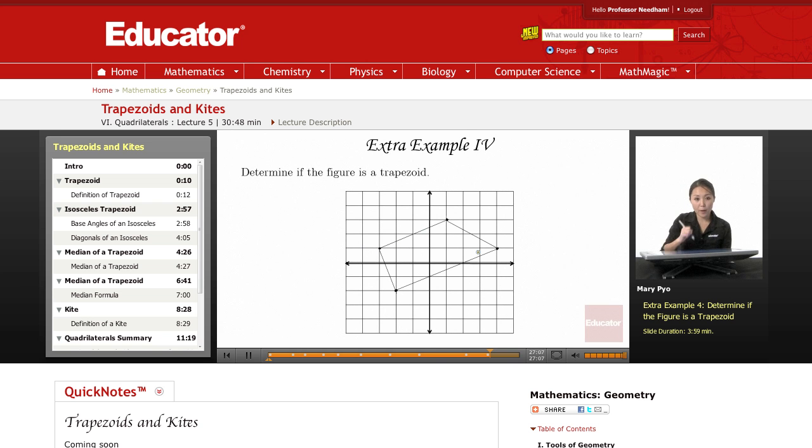...is one pair of parallel sides, only one. That's it. All the other properties with the legs being congruent, diagonals being congruent, base angles, two pairs of base angles congruent - those properties have to do with isosceles trapezoids.